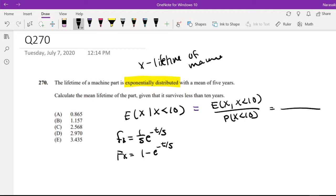The probability that X is less than 10, using our CDF formula, is equal to 1 minus e to the negative... 10 over 5, which is just 2. So 1 minus e to the negative 2.